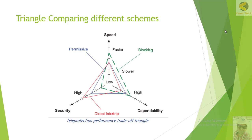In our previous sections we have studied three types of basic communication schemes. The first type is the direct intertrip scheme, shown by a red triangle. The second type is the permissive transfer trip scheme, shown by a blue triangle. The third type is the blocking scheme, shown in green. We have drawn a system in which we compare speed, dependability, and security.